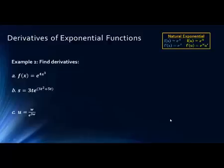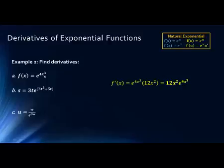Let's try some examples. We're going to take the derivative of the outer function, which is e to the U, where U is 4x cubed. The first part of our answer is e to the 4x cubed, and then we multiply by the derivative of the exponent using the simple power rule, which gives 12x squared. So our final answer is simply 12x squared times e to the 4x cubed.